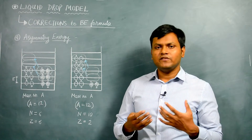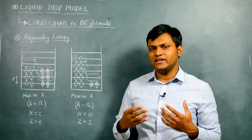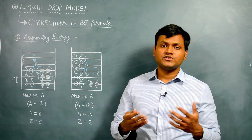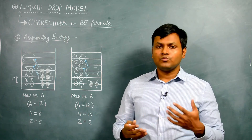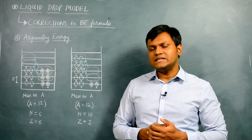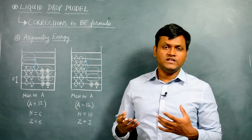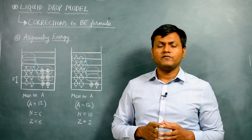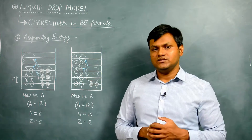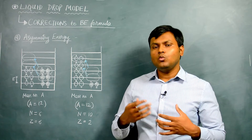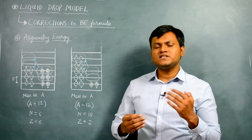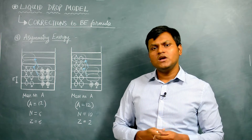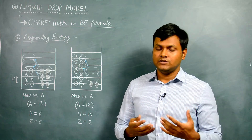The binding energy or the stability of a nucleus is also affected by the total number of neutrons and protons inside a given nucleus. Nuclei tend towards those configurations where the number of neutrons and number of protons are almost equal to each other. If the number of neutrons or protons is much higher, those nuclei are usually unstable and they undergo radioactive decay processes to reach configurations where, for the same mass number, you end up getting approximately equal numbers of neutrons and protons. This leads to what is known as the asymmetry energy.